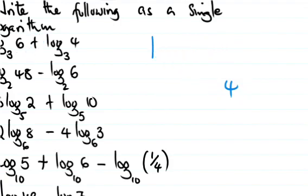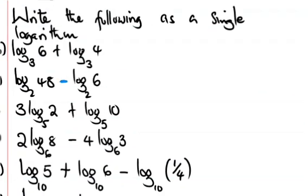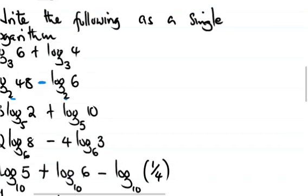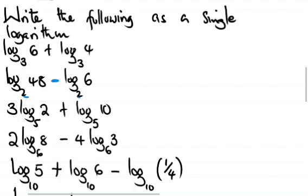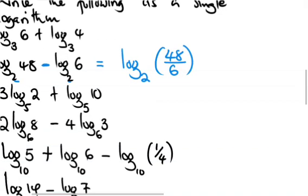Next question: log base 2 of 48 minus log base 2 of 6. We are subtracting here. Since the bases are equal, we are going to divide. We can write this as log base 2 of 48 divided by 6.